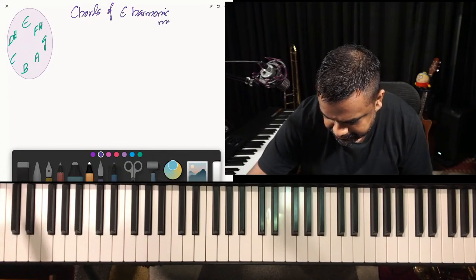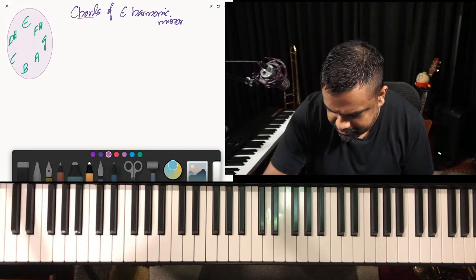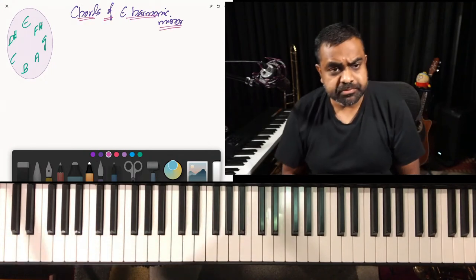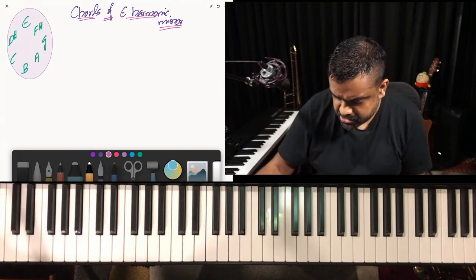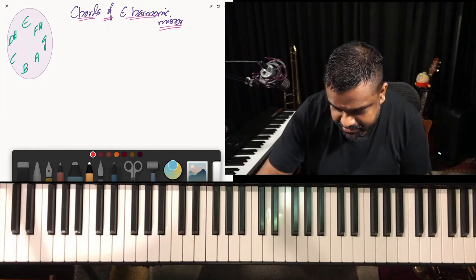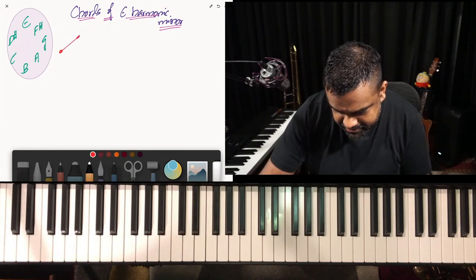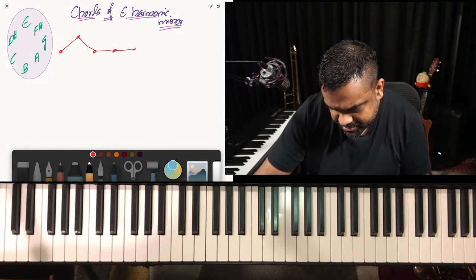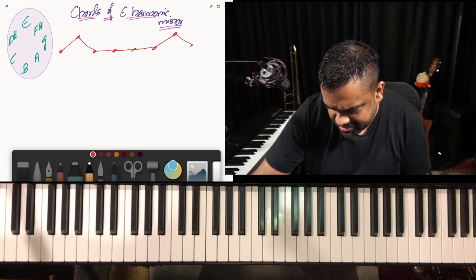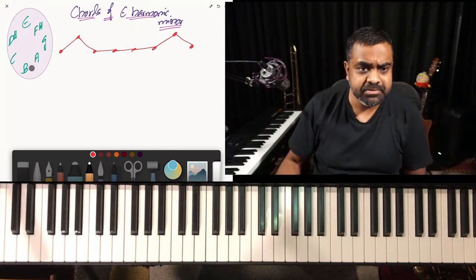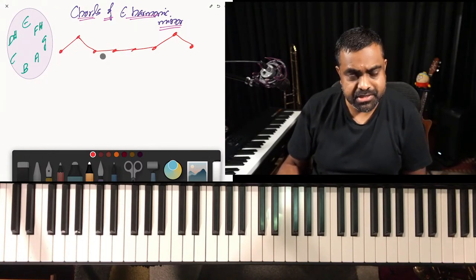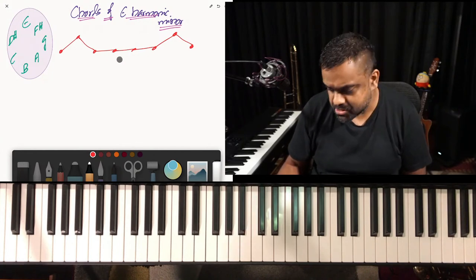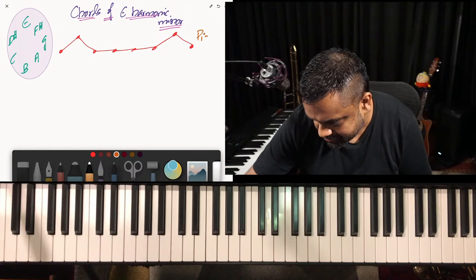Another thing you may want to do is draw the scale linearly — what I like to call the piano worm. You take E, F#, G, A, B, C, D#, E and you get a clear idea of where the black notes and white notes are. E is a white note, F# black, G white, A white, B white, C white, D# black, E white. That's what I call the piano worm.